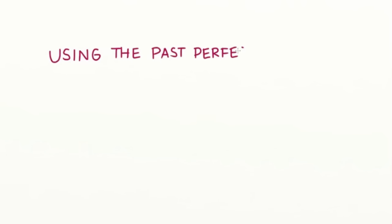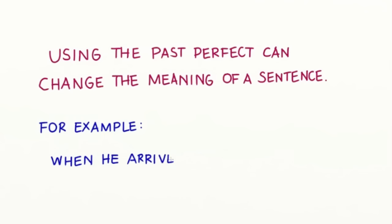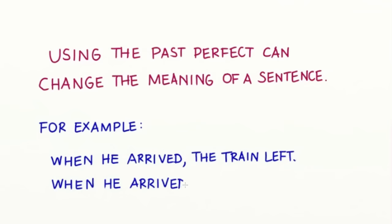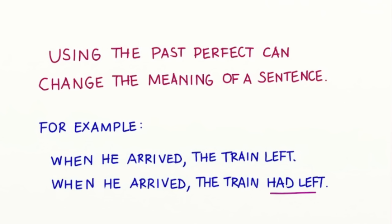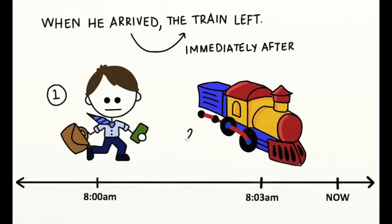Using the past perfect can change the meaning of a sentence. Let's compare two sentences: 'When he arrived, the train left' versus 'When he arrived, the train had left.' In the first sentence, 'when he arrived, the train left,' this means he arrived and the train left immediately after.